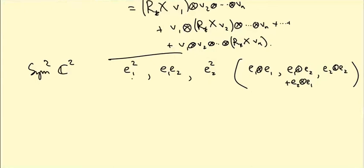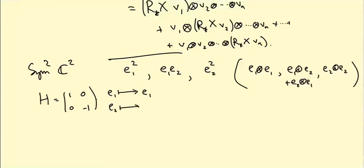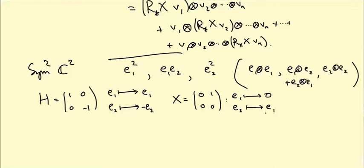How do the Lie algebra elements act on E1 and E2? In the standard representation, H is the matrix (1,0; 0,-1), so it sends E1 — the basis vector (1,0) — to E1, and E2 — the basis vector (0,1) — to -E2. X is (0,1; 0,0), so it sends E1 to zero and E2 to E1. Y is (0,0; 1,0), so it sends E1 to E2 and E2 to zero.